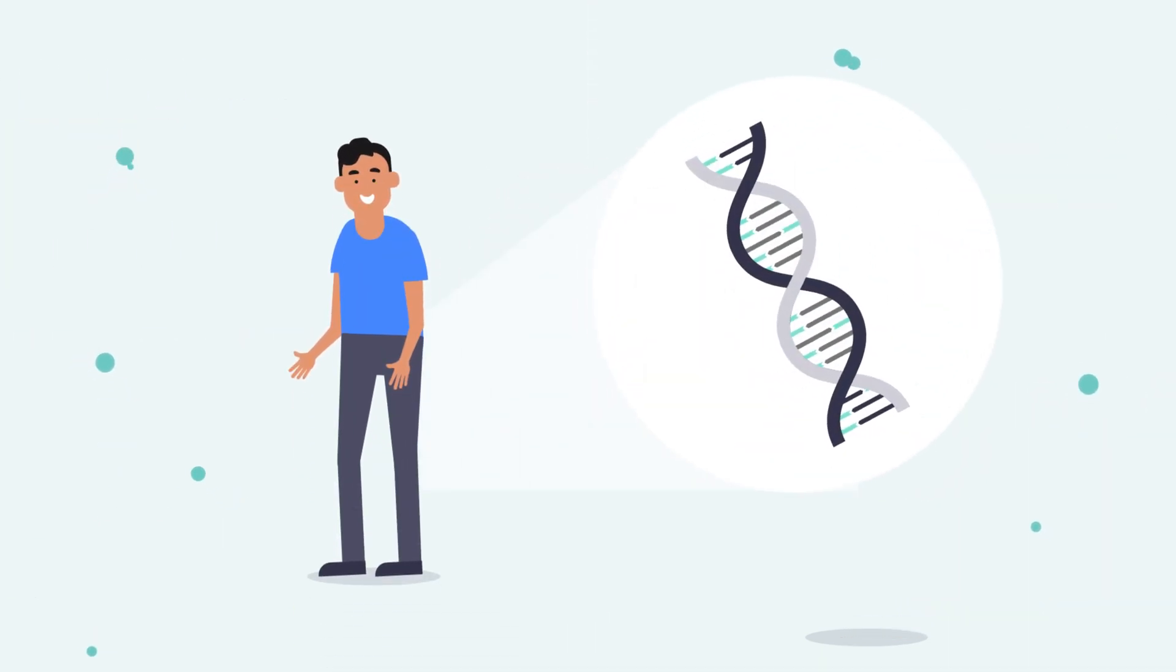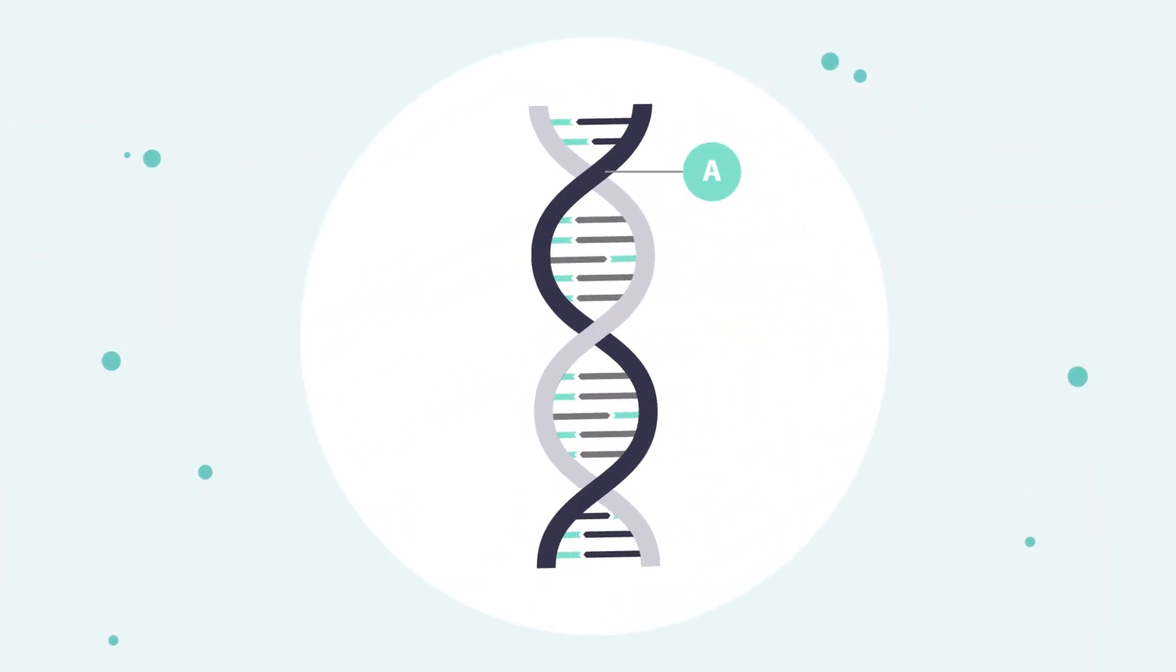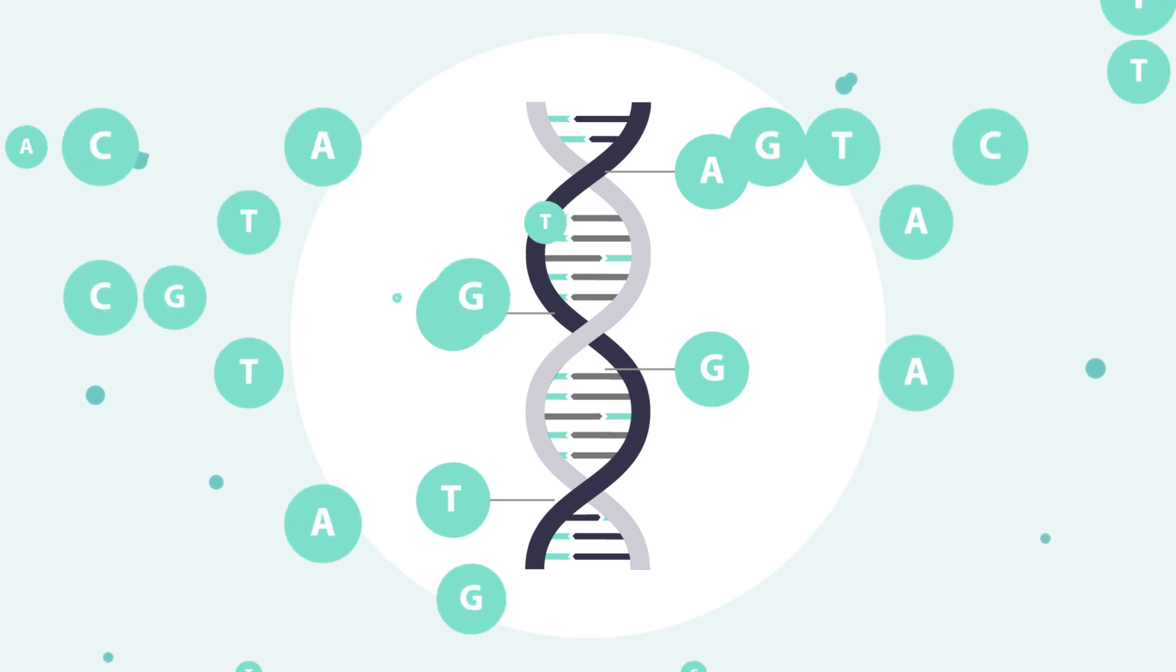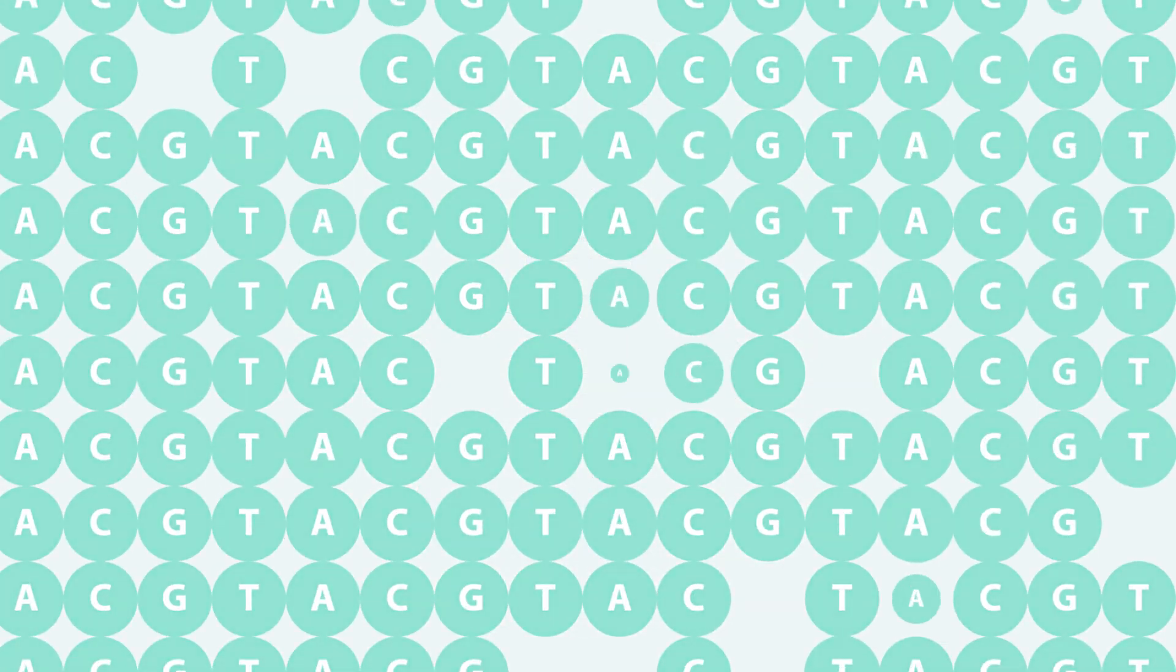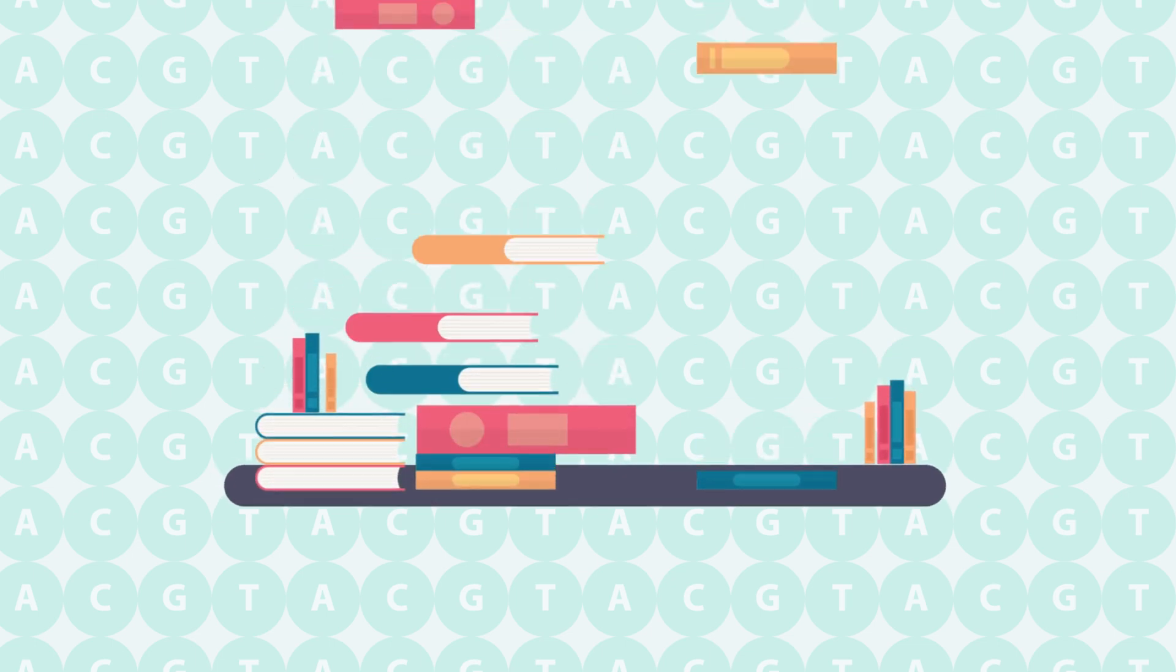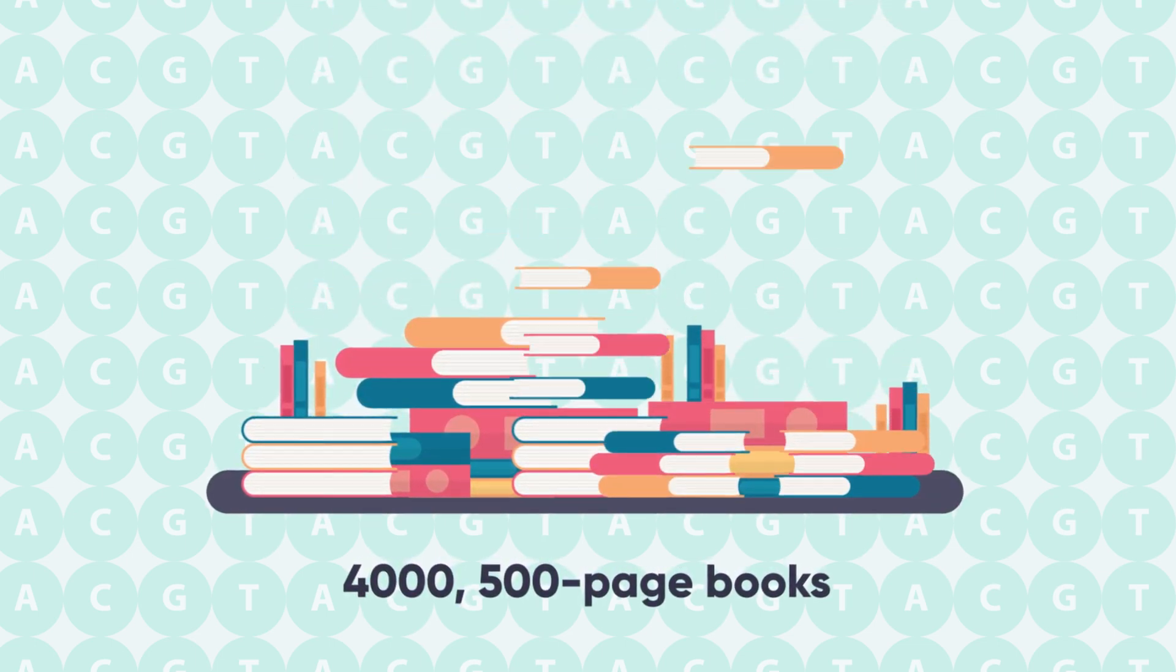The information coded in a person's DNA is based on four different letters. Each person's genetic code is billions of letters long and could fill over 4,500-page books.